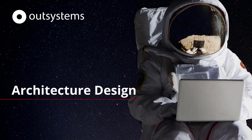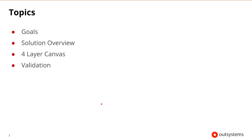Welcome to this session on architecture design. In this session, we'll discuss the topics that should be captured and documented as part of the architecture design document. These include the goals of the architecture design, the solution overview, and the four-layer canvas design. We'll also discuss the importance of validating the architecture design. So let's go ahead and get started.